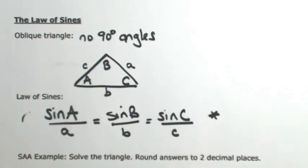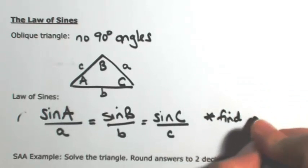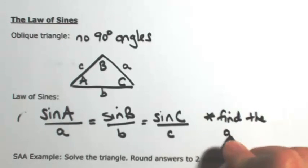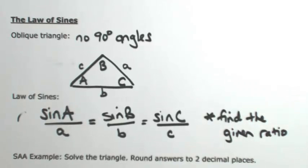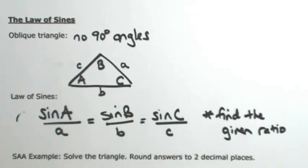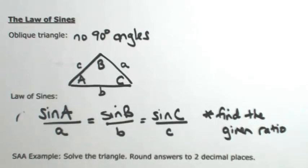One thing to keep in mind anytime you're applying Law of Sines is to find the given ratio. So there will be an angle with its corresponding side. Once you figure out which one you have, then you can figure out which part of the formula you should use.